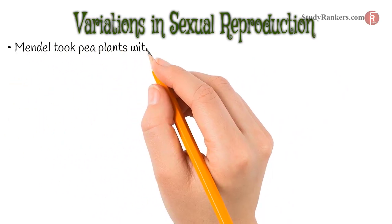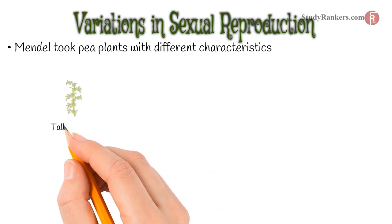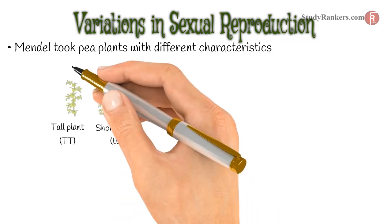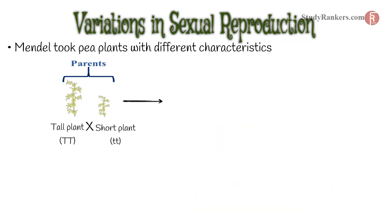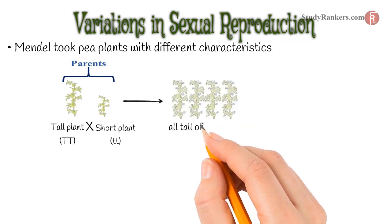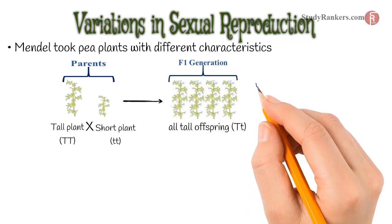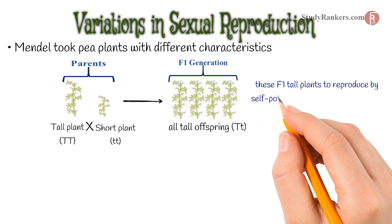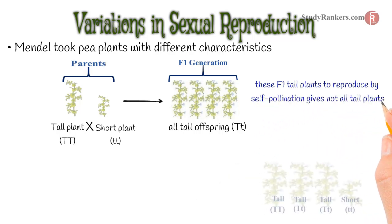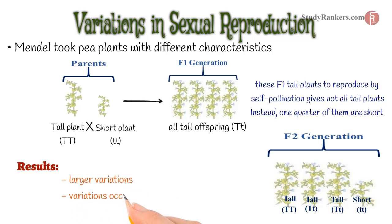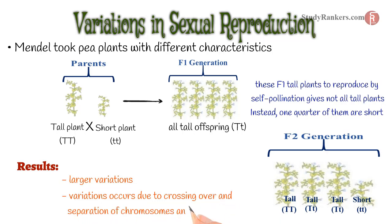Variations in sexual reproduction: Mendel took plants with different characteristics — a tall plant denoted by capital TT and a short plant denoted by small tt. These are the parents. When crossed, the F1 progeny had all tall offspring denoted by capital T and small t. These F1 tall plants, when allowed to self-pollinate, give not all tall plants — instead, one quarter of them are short. This results in larger variation, which occurs due to crossing over, separation of chromosomes, and mutations.